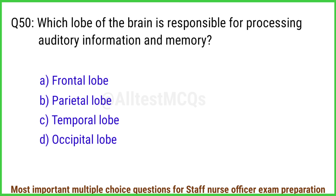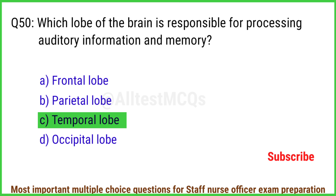Q50. Which lobe of the brain is responsible for processing auditory information and memory? The right answer is option C: Temporal lobe.